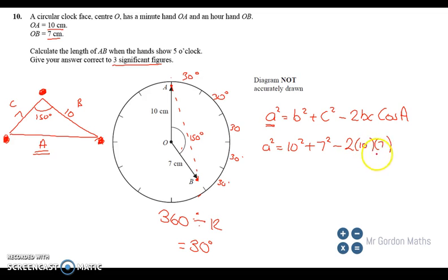Brackets means times, that's just the way I like to multiply things together. Cos of the angle, which was the cos of a, so the angle opposite a is 150, the one we worked out.